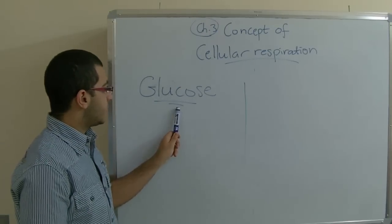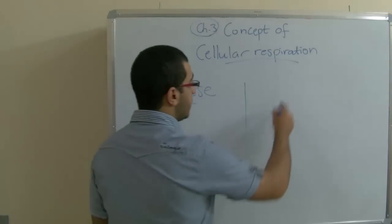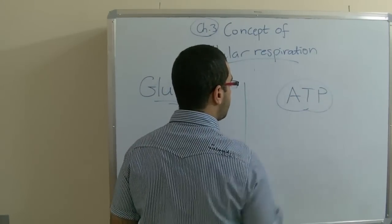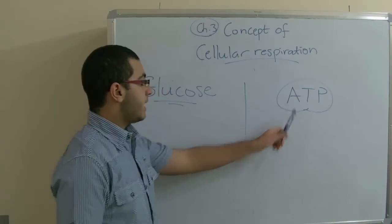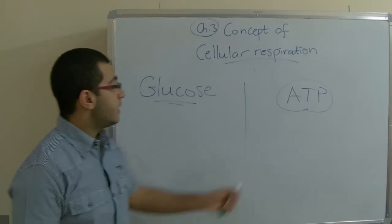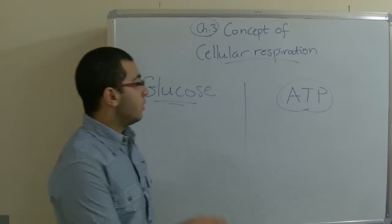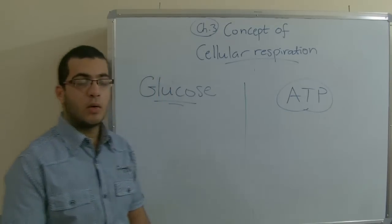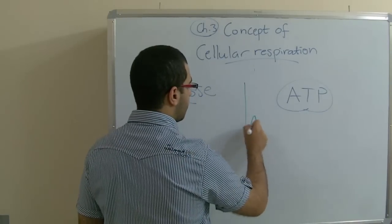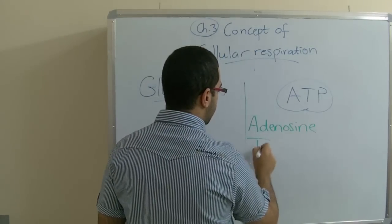When the glucose molecule is oxidized through the process of cellular respiration energy is produced in the form of ATP molecules. These ATP molecules are considered the universal energy currency as they are easily spent and exchanged by all the living cells in all the living organisms. ATP stands for adenosine triphosphate.